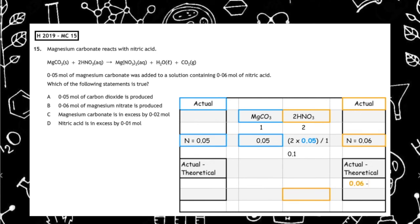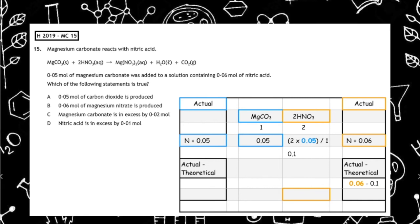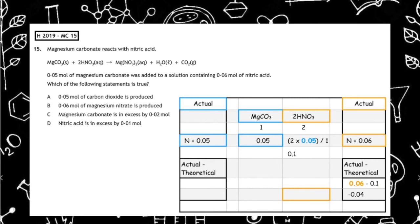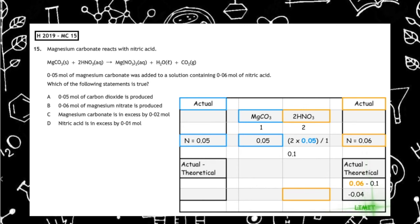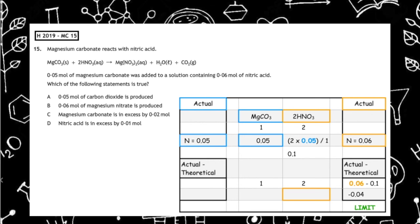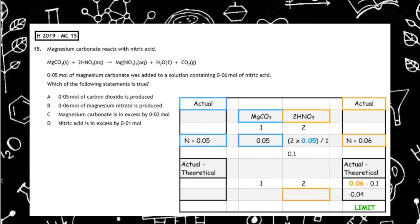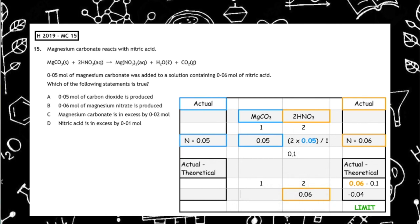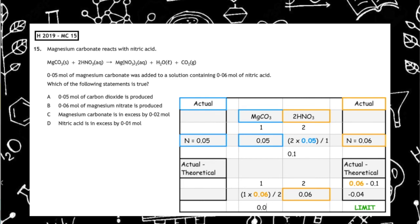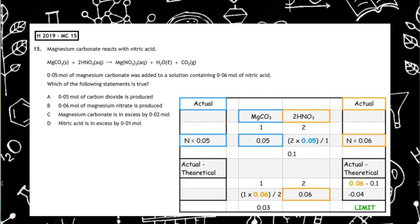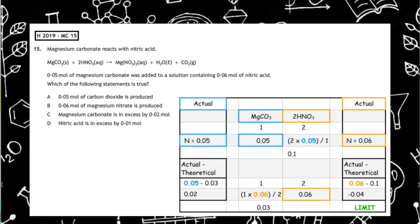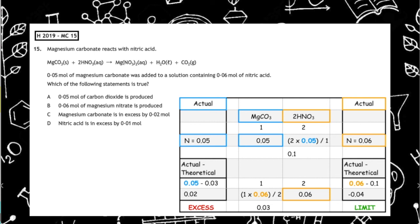We do actual minus theoretical: 0.06 minus 0.1 gives negative 0.04, which means nitric acid is our limiting reagent. On the other side, using the 2 to 1 ratio with 0.06 moles of nitric acid: 1 times 0.06 divided by 2 gives 0.03. Actual minus theoretical for magnesium carbonate is 0.05 minus 0.03, giving positive 0.02, so magnesium carbonate is in excess. Multiple choice answer C states the magnesium carbonate is in excess by 0.02 moles — that is the correct answer.